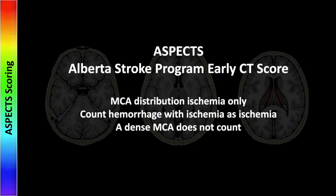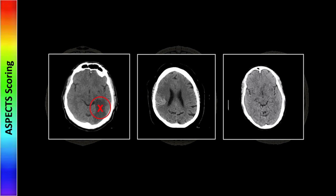Important points: ASPECTS applies to MCA distribution ischemia only — that is the only thing that counts. Anytime you see hemorrhage in the setting of ischemia, meaning hemorrhagic conversion of an ischemic insult, that should be counted as ischemia in ASPECTS scoring. A dense middle cerebral artery does not count. To reiterate, posterior circulation doesn't count in ASPECTS scoring. A region of ischemia would count as a 0 or minus 1, and an area of hemorrhage similarly counts against the patient because the assumption is that there is underlying ischemia.